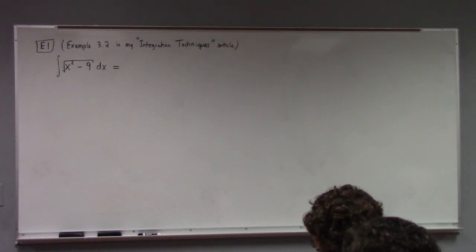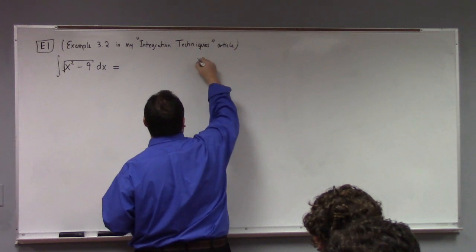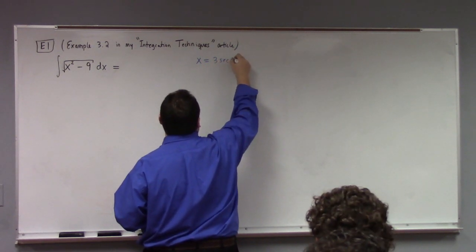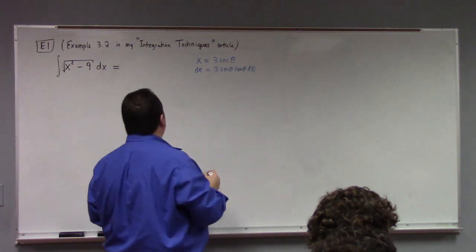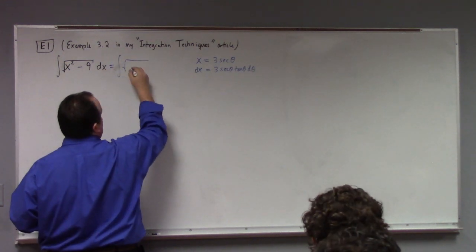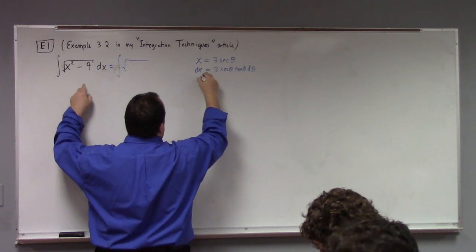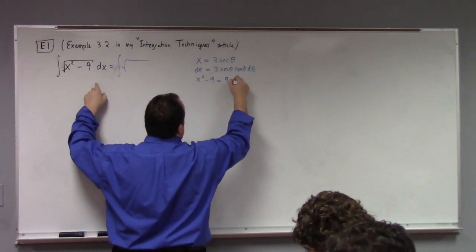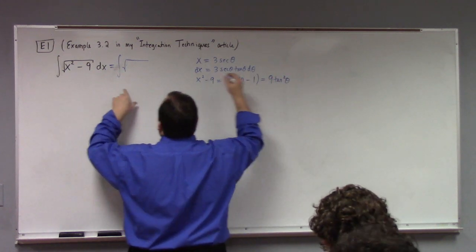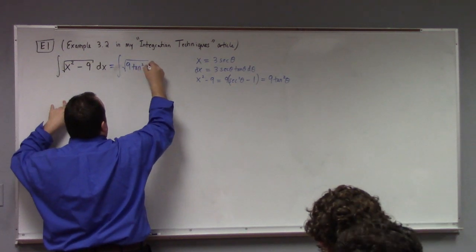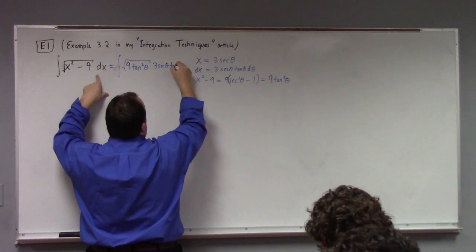How should we do this problem? We have the integral of the square root of x² minus 9. Which trig substitution should we make? Secant, right. Let's try x equals 3·secant(θ). If I do that, dx is 3·secant(θ)·tangent(θ)·dθ. Let me do the algebra over here first: x² minus 9 is 9·secant²(θ) minus 9, factoring the 9 out — which is 9·tangent²(θ). So what we have under the radical is the square root of 9·tangent²(θ).